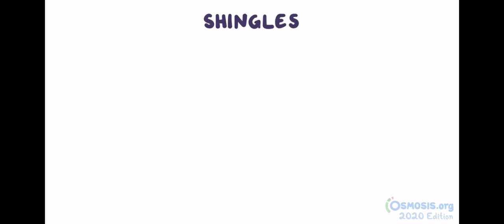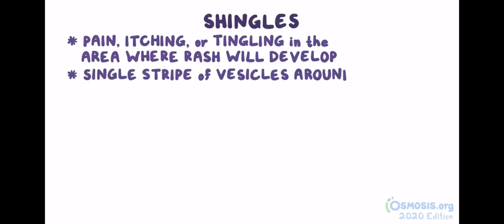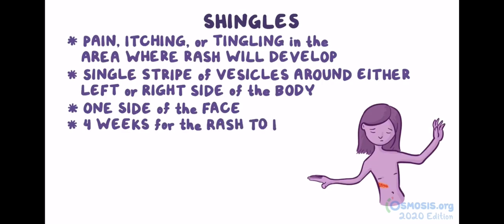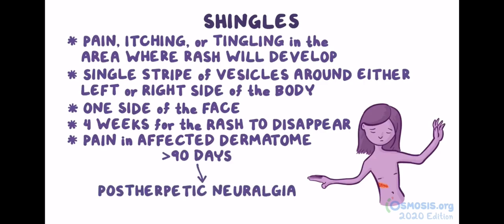In shingles, there's typically pain, itching, or tingling in the area where the rash will develop. The rash itself is usually in a single stripe of vesicles around either the left or the right side of the body, or on one side of the face. It usually takes four weeks for the rash to disappear, but there can be pain in the infected dermatome which lasts for more than 90 days, called postherpetic neuralgia.